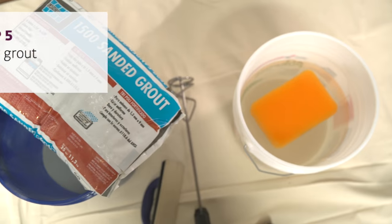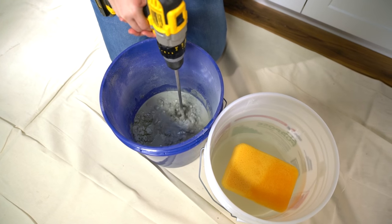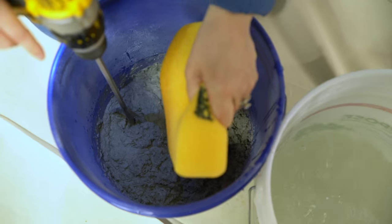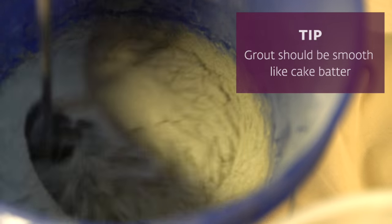Pick your grout based on the tile you're using—sanded or unsanded. In a clean bucket, mix the grout by pouring the powder into a bucket, then add water and stir until it's a cake batter consistency.